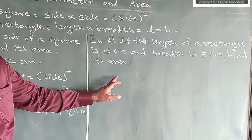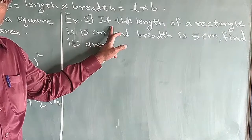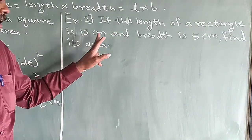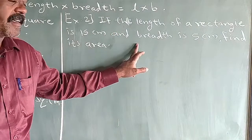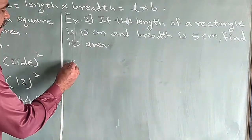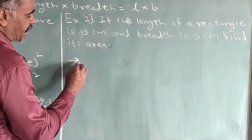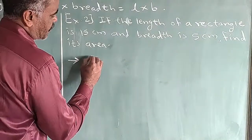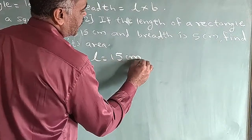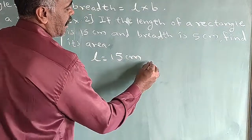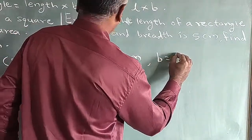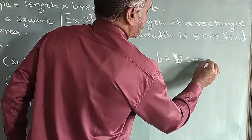See the next example. If the length of a rectangle is 15 cm and breadth is 5 cm, then find its area. So here, length is given: L is equal to 15 cm, and breadth is given: B is equal to 5 cm.